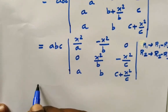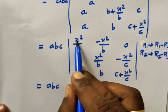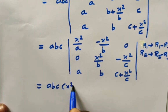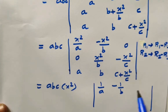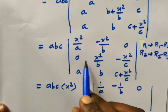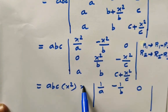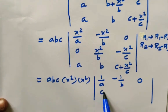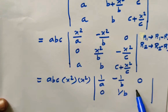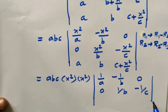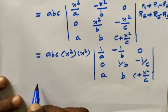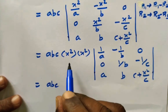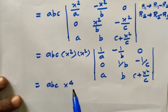Now in R1, x squared is the common element, so take x squared outside. Remaining: 1/A, minus 1/B, 0. In R2, x squared is also common, so take x squared outside. Remaining: 0, 1/B, minus 1/C. R3 remains: A, B, C plus x squared divided by C. This gives us A·B·C multiplied by x squared times x squared, which equals x to the power 4.